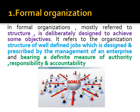The first design of organization structure is formal organization. Formal organization mostly refers to the structure which is deliberately designed to achieve some objectives. These departments are structured and designed deliberately to achieve some common goals. It refers to the organization structure of well-defined jobs which are designed and prescribed by the management. In this type of organization, the design is well-defined and the responsibilities to the employees are given by the higher authority. Each employee should have definite authority, responsibility, and accountability in completing the task — this is known as formal organization.